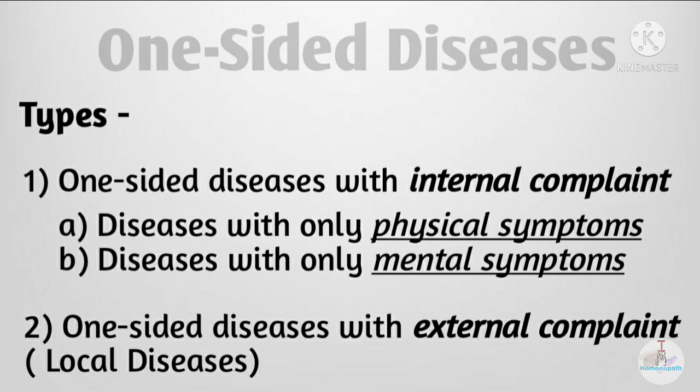Now the types: the first type is one-sided diseases with internal complaint, which is divided into two sub-types — diseases with only physical symptoms and diseases with only mental symptoms. The second type is one-sided diseases with external complaint, which is also called local diseases.